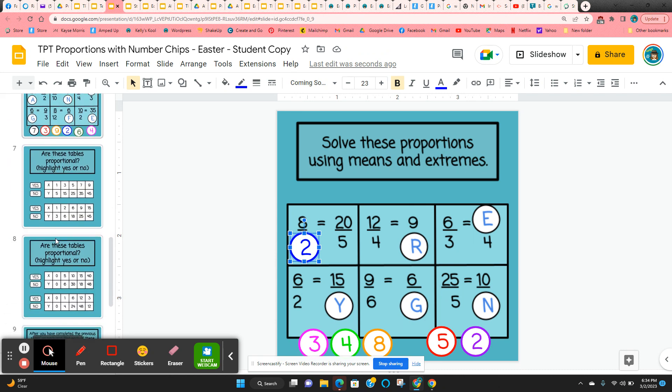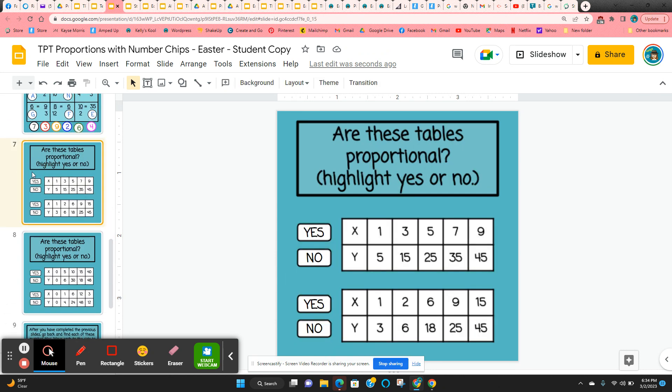And another one with means and extremes. Now they're going to be looking at proportional tables to see if they're proportional. And they're just going to highlight yes or no. So on this first one, multiply by five. On each one, you multiply the x term times five and you get the y. So yes, it is proportional.